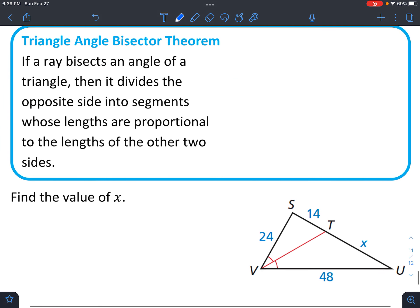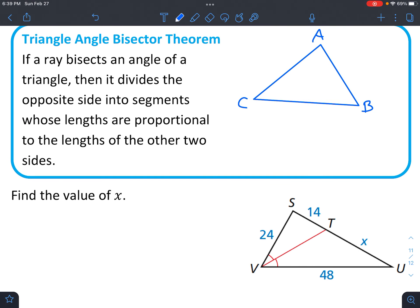All right, last theorem. And once again, it's going to have to do with some proportions. And this time we're given a triangle. And it says, if a ray bisects an angle of a triangle. So first, let's draw kind of a standard triangle. And then we'll call it ABC. And we'll have this ray going right down the center. Just draw the best that you can. We'll call this point D.